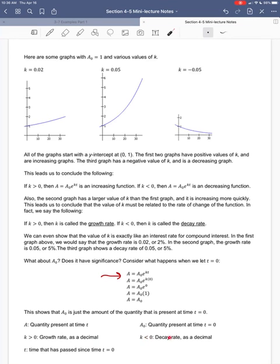If k is less than 0, it's a decay rate, again, as a decimal. And t is just the time that's passed since the start of all of this, which we represent with t equals 0.